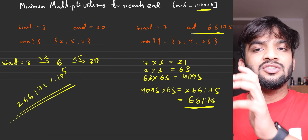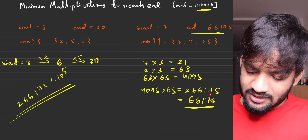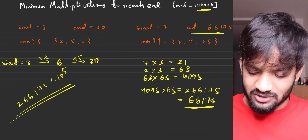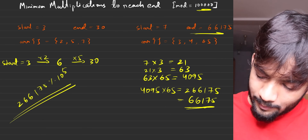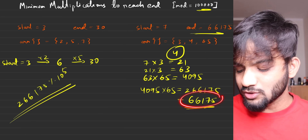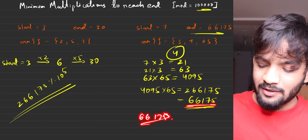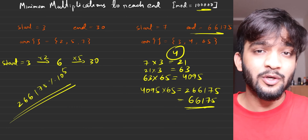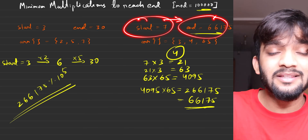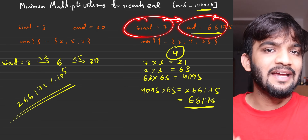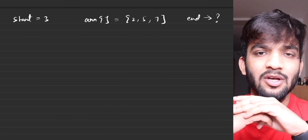In Example 2, we did four multiplications total: one, two, three, and four. So the answer is four steps. If that wasn't the answer, you'd try multiplying 66175 by 3 or other numbers. The main goal is to go from start to end in minimum steps. This leads us to the thought process behind solving this problem.